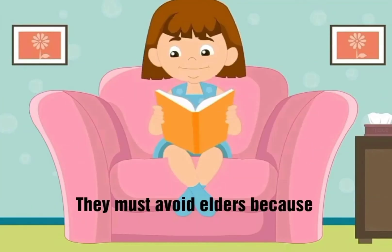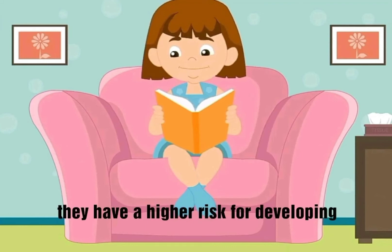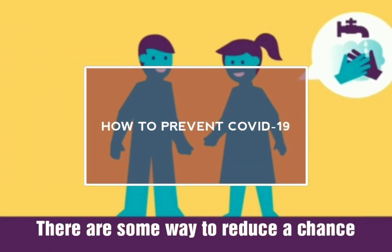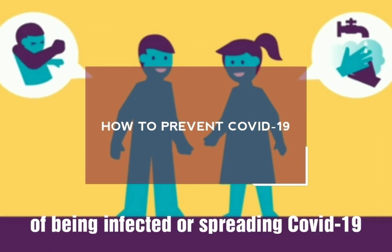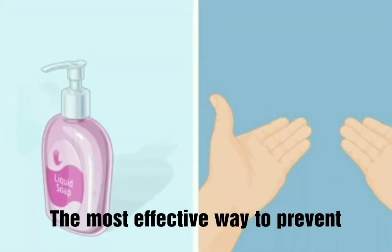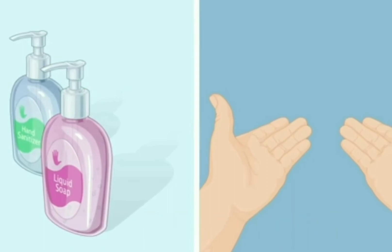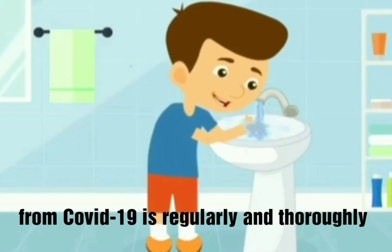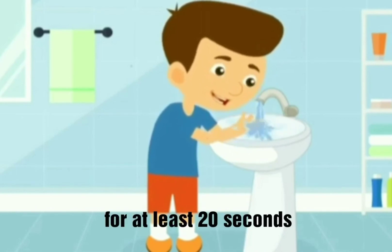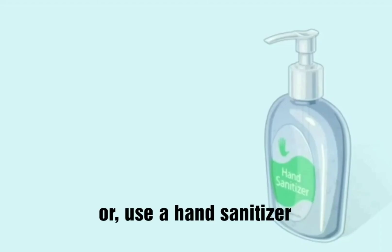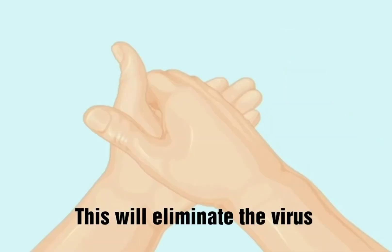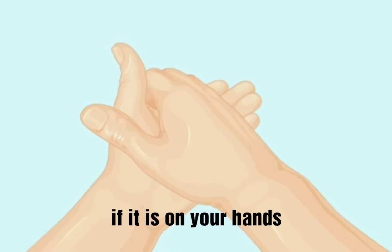There are some ways to reduce the chance of being infected or spreading COVID-19 by taking simple precautions. The most effective way to prevent COVID-19 is to regularly and thoroughly wash hands with soap and water for at least 20 seconds, or use a hand sanitizer with at least 60% alcohol. This will eliminate the virus if it is on your hands.